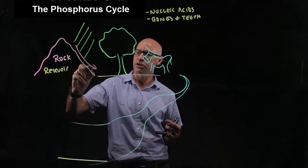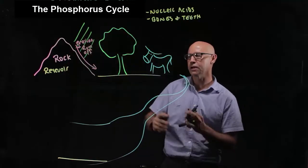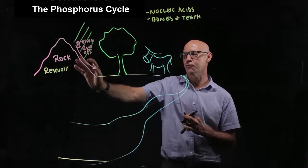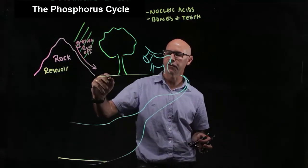So we have erosion and runoff. Rain and weathering causes erosion and runoff of that phosphorus into the soil.